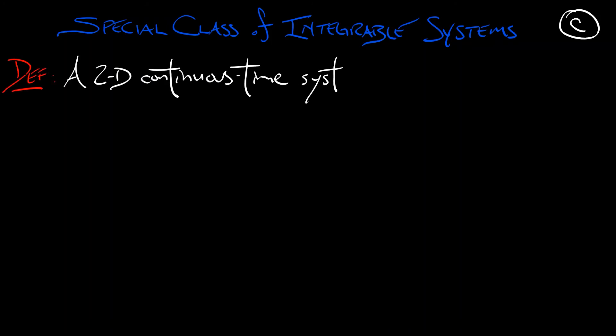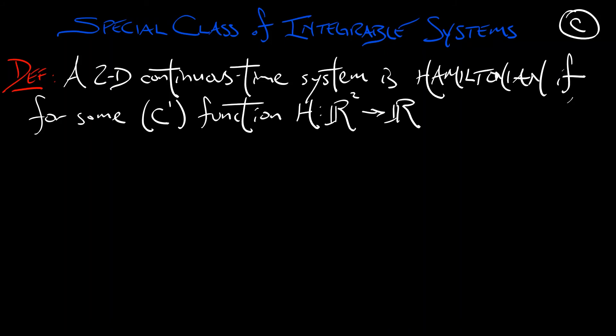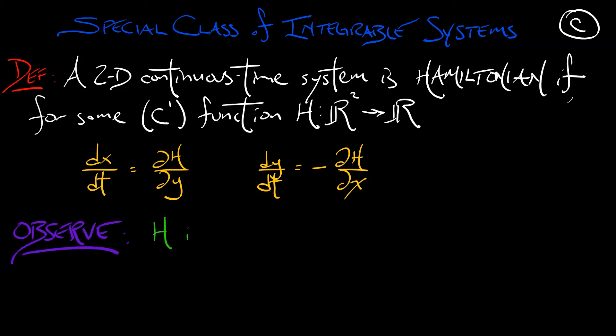Here's the definition. A 2D continuous time system is said to be Hamiltonian if for some continuously differentiable function h from the plane to the reals, we can express our system as dx/dt equals ∂h/∂y and dy/dt equals minus ∂h/∂x. Now, what is this? Why do we care about this?